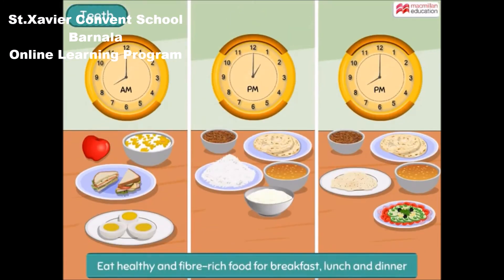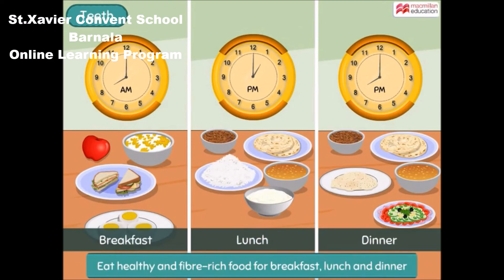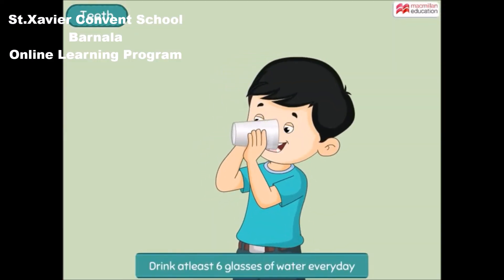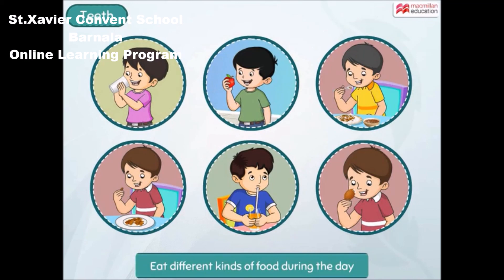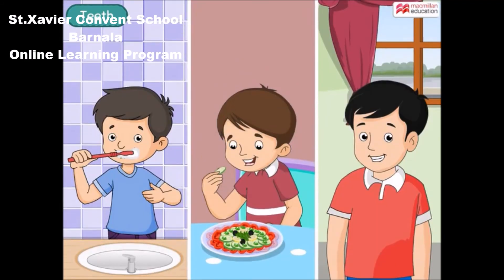Eat healthy and fiber-rich food for breakfast, lunch, and dinner. Drink at least six glasses of water every day. Eat different kinds of food during the day. Remember to brush properly and eat healthy for shiny and strong teeth.